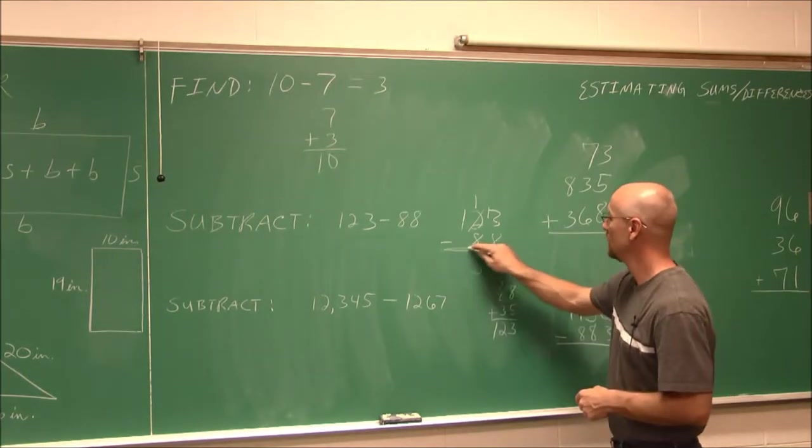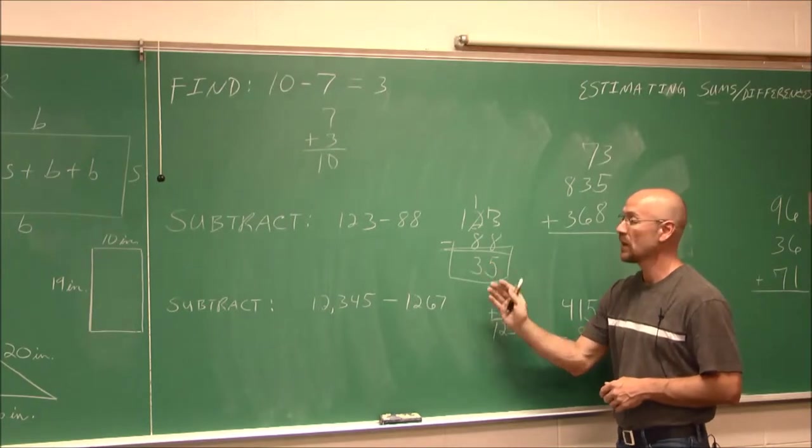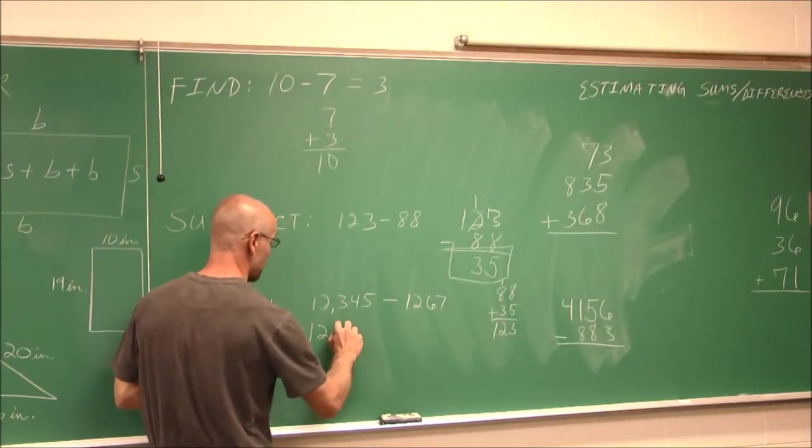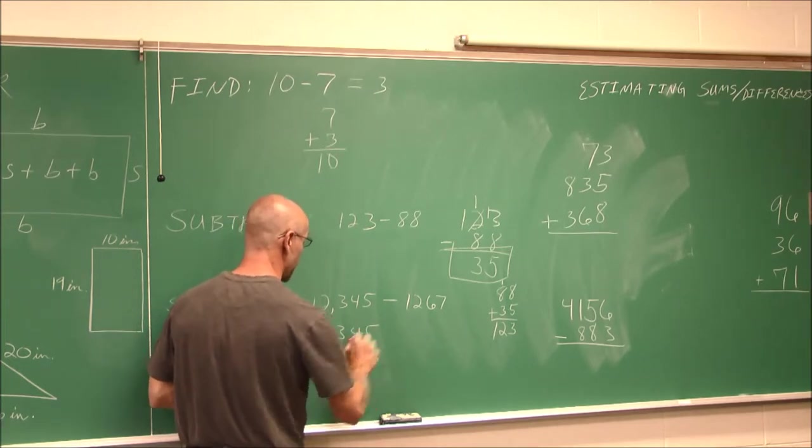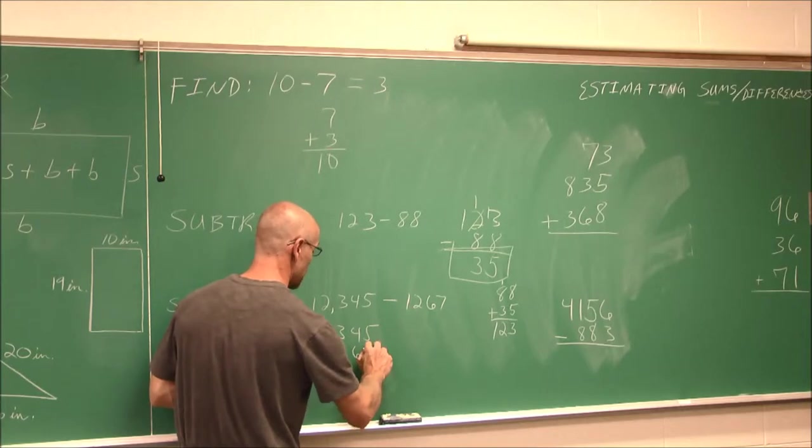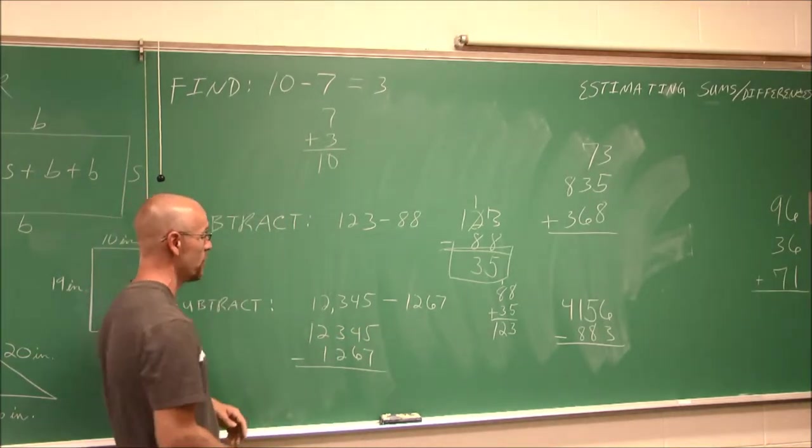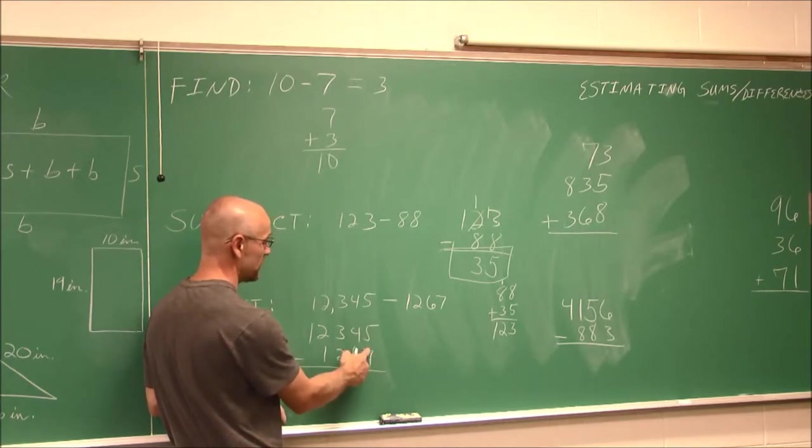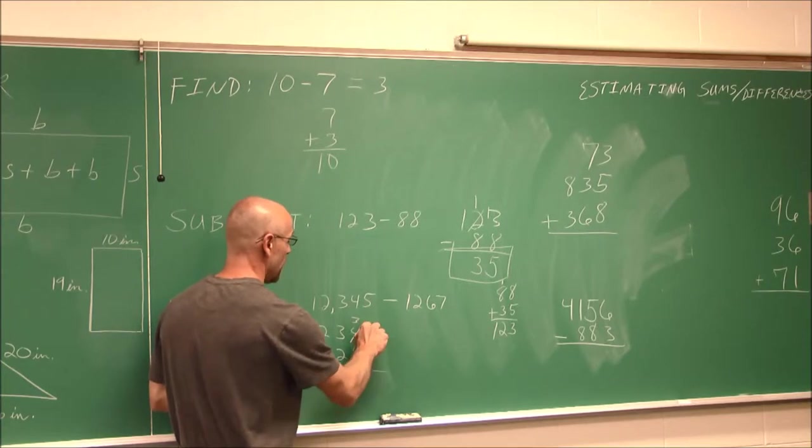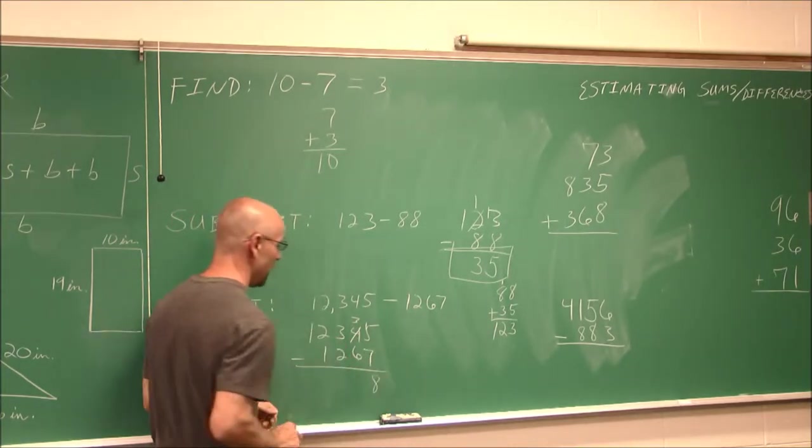Let's try another example. If we have 12,345, and we want to subtract 1,267, I make sure that all my place values line up, and now I subtract. Well, 5 is less than 7, so I can't take 7 from it. So I'm going to borrow. And now I have 15 minus 7, which will give me 8.